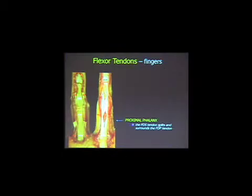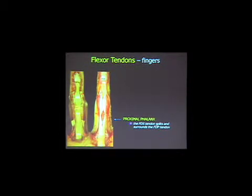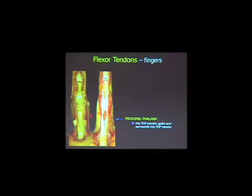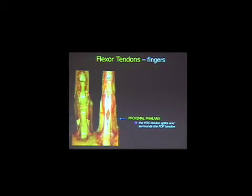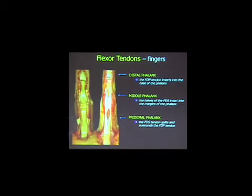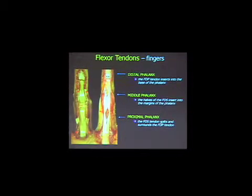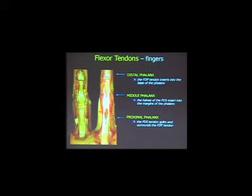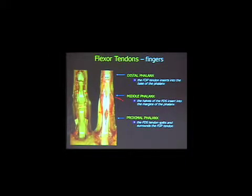In the fingers, the flexor tendons have a peculiar arrangement. The flexor digitorum profundus has a straight course and inserts into the base of the distal phalanx. On the other hand, the flexor digitorum superficialis splits at the level of the proximal phalanx into two slips. The two slips pass on each side of the flexor digitorum profundus to insert into the middle phalanx. This arrangement gives autonomous flexion: the flexor digitorum profundus selectively acts on the distal phalanx, and the flexor digitorum superficialis acts on the flexion of the middle phalanx.